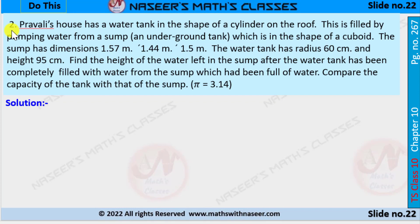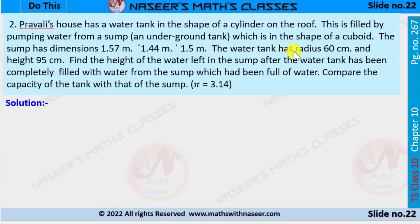In this problem, it is given that a house has a water tank in the shape of a cylinder on the roof. This is filled by pumping water from the sump, an underground tank which is in the shape of a cuboid. The sump has dimensions 1.57 meters, 1.44 meters, and 1.5 meters. The water tank has a radius of 60 centimeters and a height